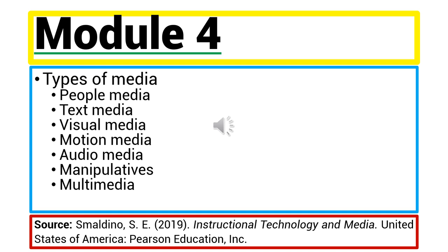Audio media are audiobooks, podcasts, cassette tapes, CDs, iTunes, and Spotify. Manipulatives are diorama, microscope, and clay or paper models. And finally, multimedia is the combination of the types of media mentioned here.